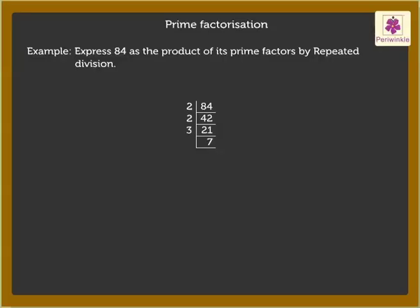Lastly, divide 7, which is a prime number, by itself. Now we have 1 as a quotient. Let us write the answer.